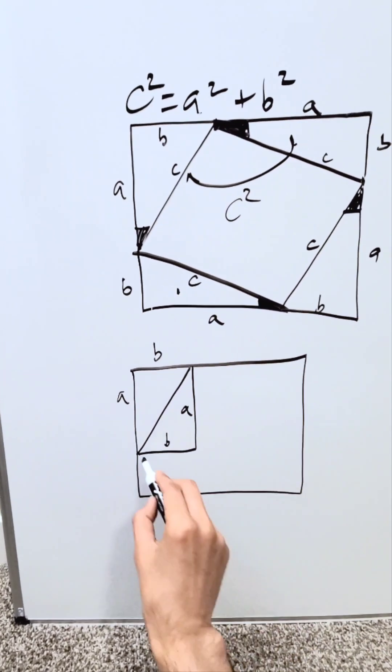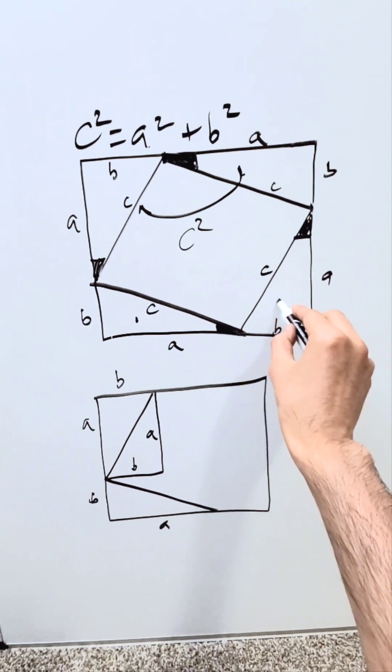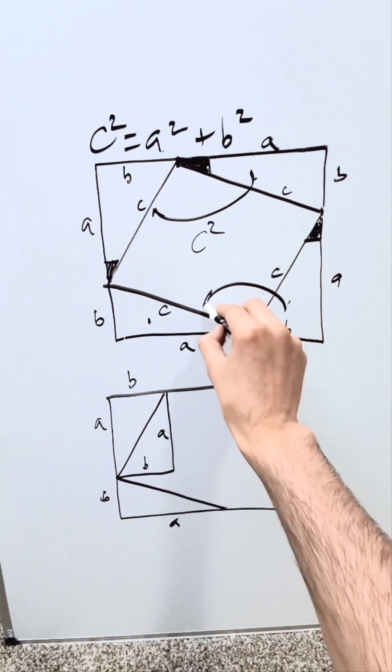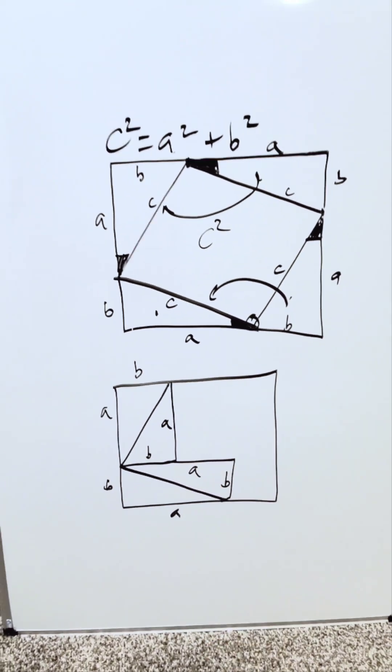This triangle stays where it is, and you're seeing it now here. Here's a, here's b. This triangle will pivot around this point, and you'll flush it over there, and it looks like this. Here's side b, here's side a.